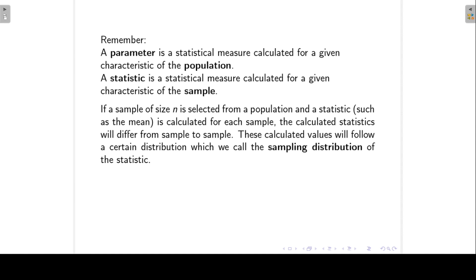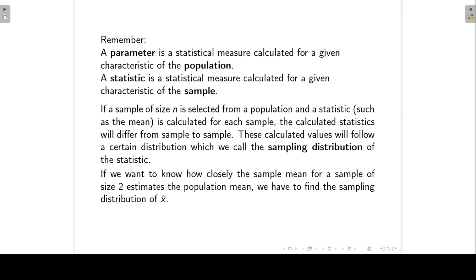If the statistic differs from sample to sample, it will follow a distribution, and this distribution is what we call a sampling distribution of the statistic. In a real life situation, we use the sample mean to estimate the population mean, so it is important to know how much variation there is in the sample mean from sample to sample, or how close to the population mean we can expect the sample mean to lie. Going back to our die example, we want to know how closely the sample mean for a sample of size 2 estimates the population mean.